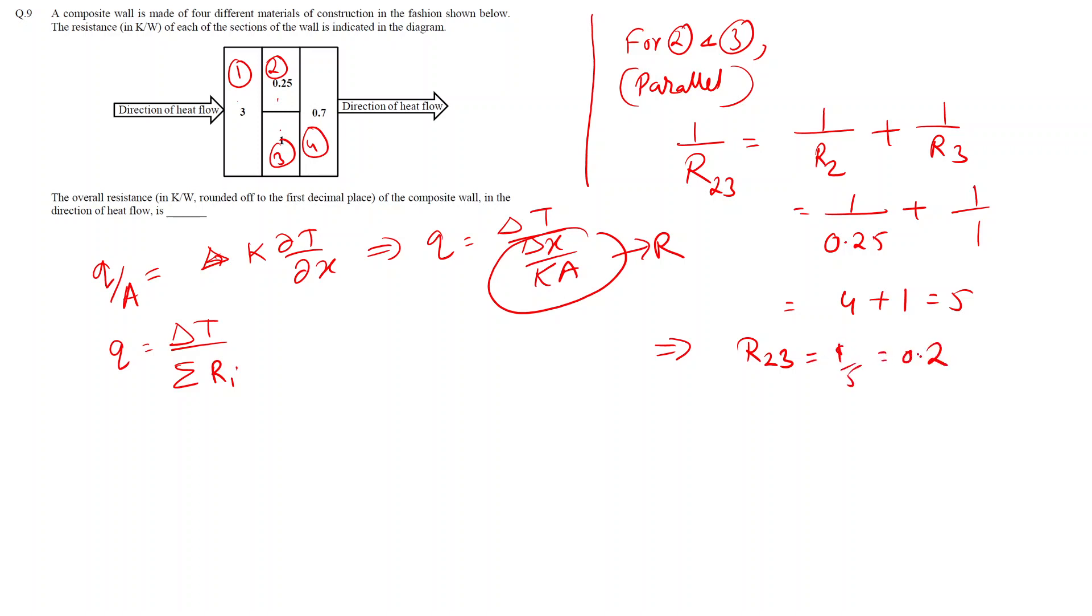Now we have R₁, R₂₃, and R₄ in series. The total resistance we can write as R = R₁ + R₂₃ + R₄. That we can write as: R₁ is given as 3, we found the parallel resistance to be 0.2, plus R₄ is given as 0.7. This we can write as 3.9.